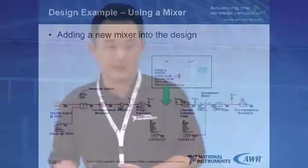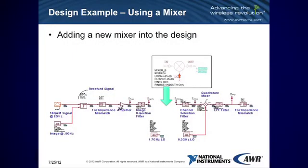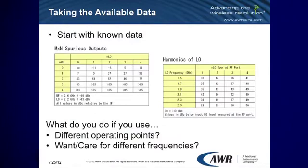Suppose we're going to drop in a new mixer into your subsystems and see how our tools can help. Suppose you had a mixer you wanted to drop in — one lying around in the lab, or perhaps the only one you can get your hands on. The first starting point is the data sheet from your manufacturer. Oftentimes you've got the spurious tables and the harmonics table. But suppose your system is designed for a different operating frequency or you have to operate at different power levels, and the data sheet is not sufficient for you.